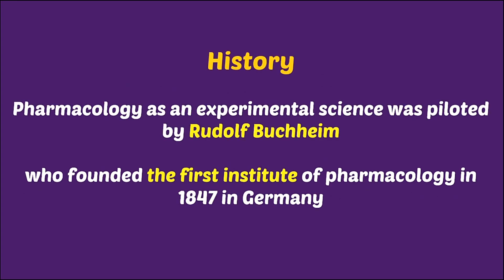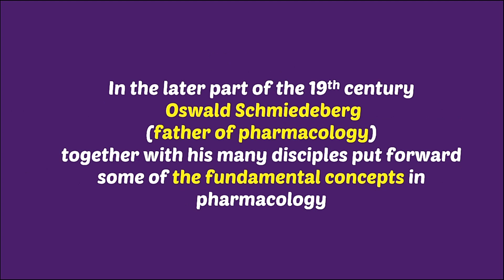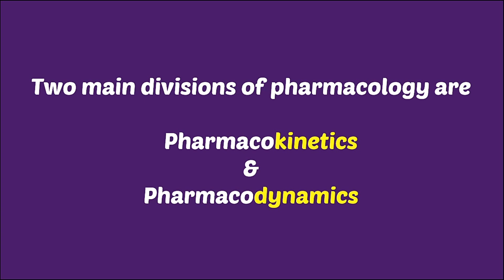Moving on to the history of pharmacology. Pharmacology as an experimental science was pioneered by Rudolf Buchheim, who founded the first institute of pharmacology in 1847 in Germany. He started a laboratory in his own house to study various actions of drugs. Following this, in the later part of the 19th century, Oswald Schmiedeberg — who is also known as the father of pharmacology — along with his disciples put forward some of the fundamental concepts of pharmacology. The two main divisions of pharmacology are pharmacokinetics and pharmacodynamics.